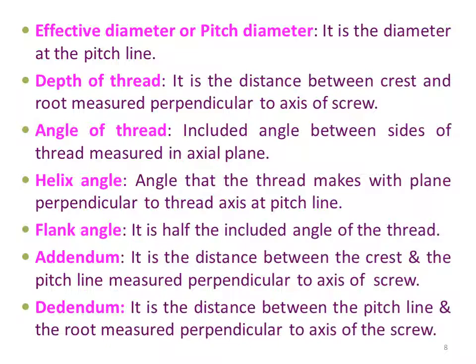Flank angle — it is half the included angle of the thread. Addendum — the distance between the crest and the pitch line, measured perpendicular to the axis of the screw thread. Dedendum — it is the distance between the pitch line and the root, measured perpendicular to the axis of the screw thread. The figure itself is quite self-explanatory in showing all these terminologies.